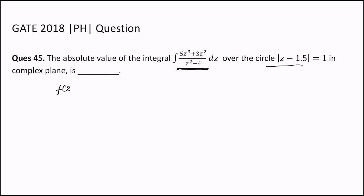So our function is f(z) = (5z³ + 3z²)/(z² - 4).